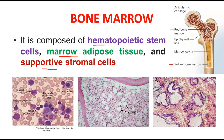Red bone marrow gives rise to red blood cells and white blood cells, while yellow bone marrow gives rise to cartilage and other adipose tissues — fats are stored in it. This is the main difference between red bone marrow and yellow bone marrow.